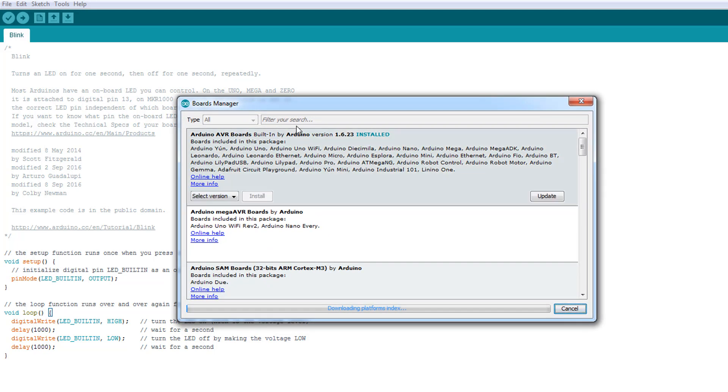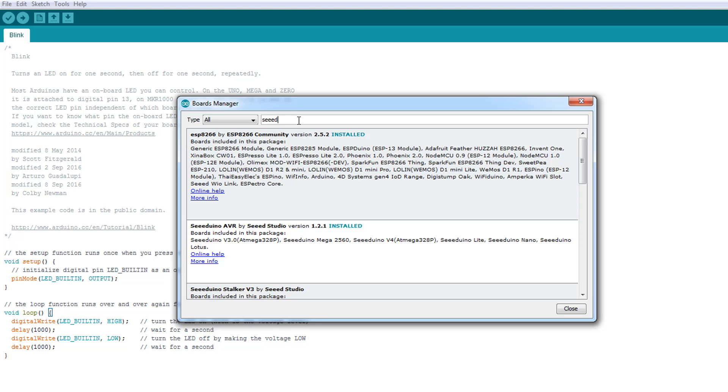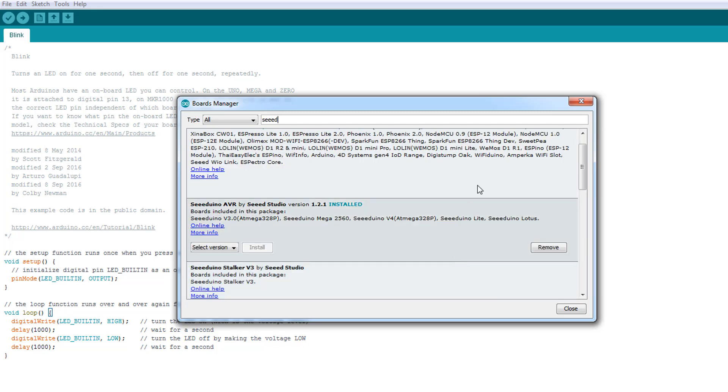This is exactly how you add the ESP32 package or the ESP8266 package. This adds all the Seeed boards. Press OK. Then you go to Tools, Boards, Boards Manager.